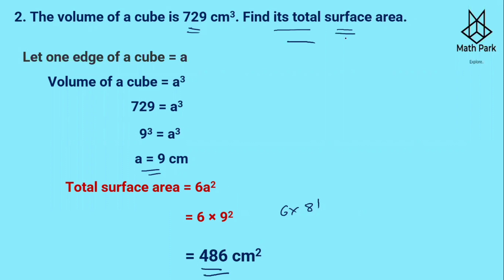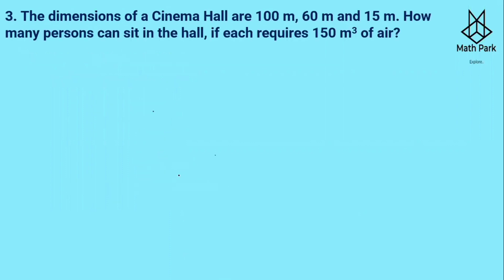So when volume is given, you first find the length of the edge, then calculate the total surface area. Question number three: The dimensions of the hall are 100 m, 60 m, and 15 m. So length = 100 m, breadth = 60 m, and height = 15 m.